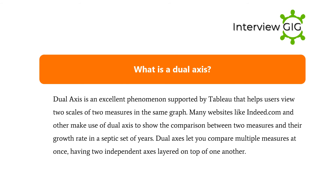What is a Dual Axis? Dual Axis is an excellent feature supported by Tableau that helps users view two scales of two measures in the same graph. Many websites like Indeed.com make use of Dual Axis to show the comparison between two measures and their growth rate in a specific set of years. Dual Axis lets you compare multiple measures at once, having two independent axes layered on top of one another.